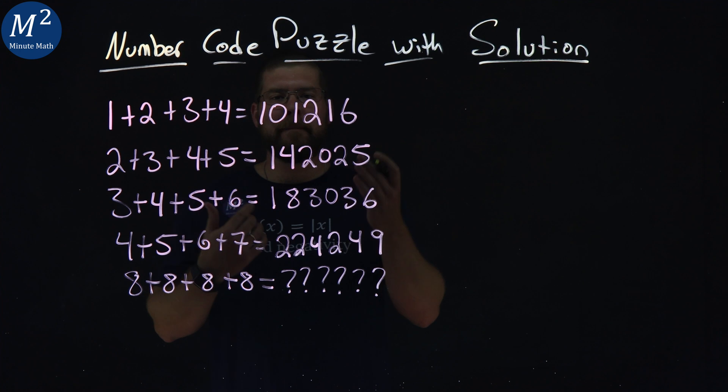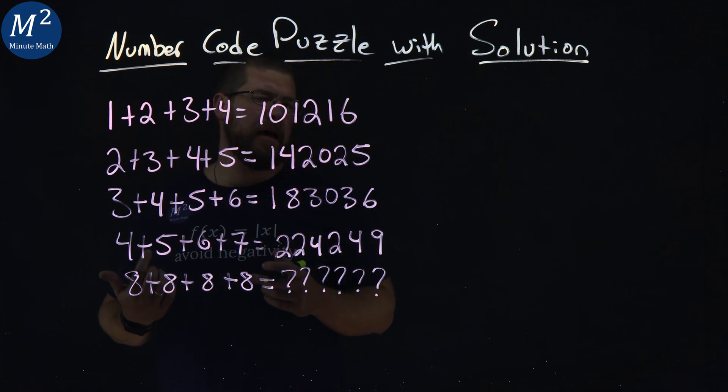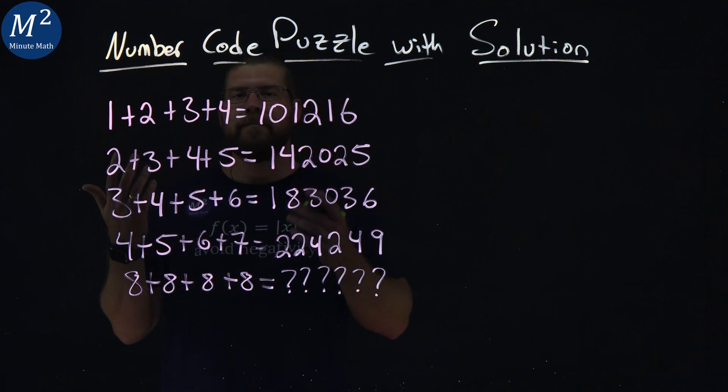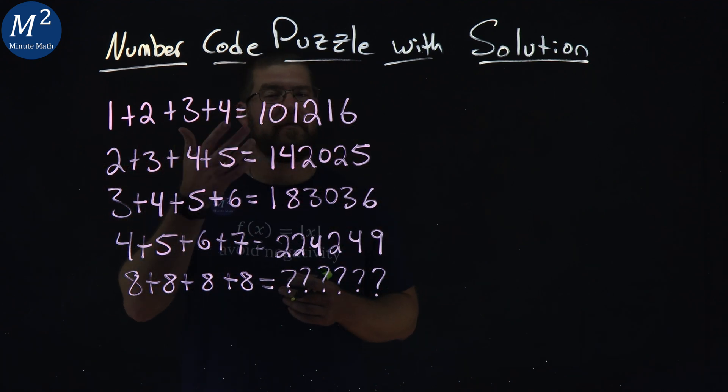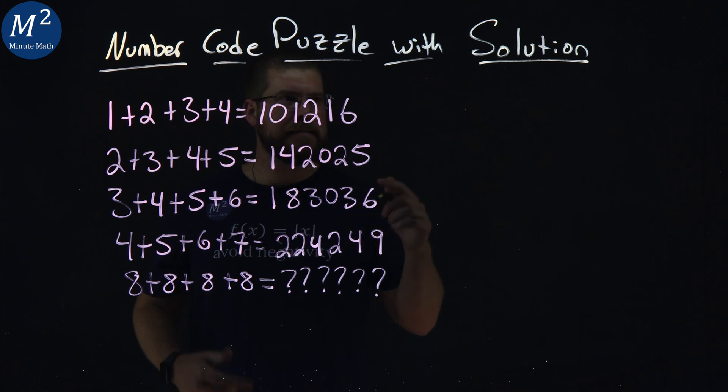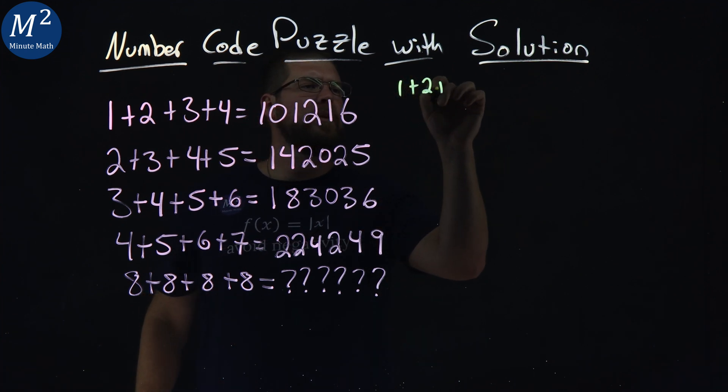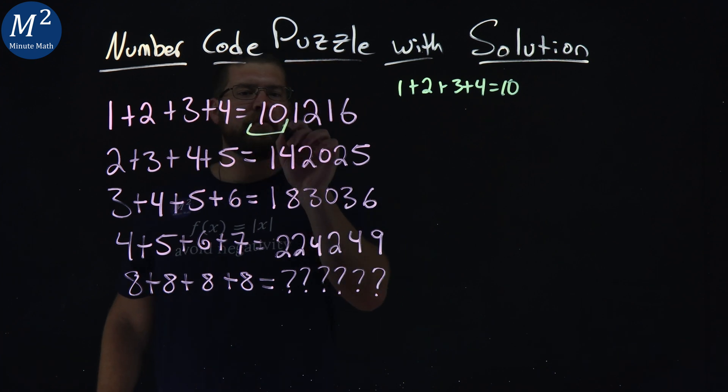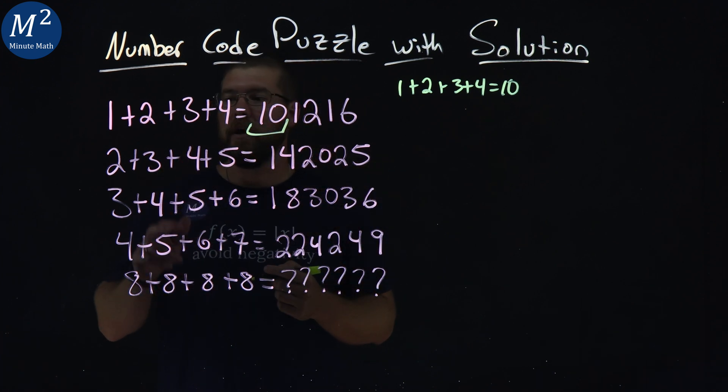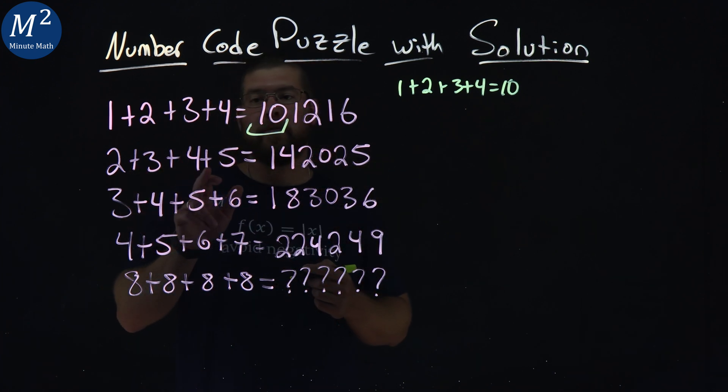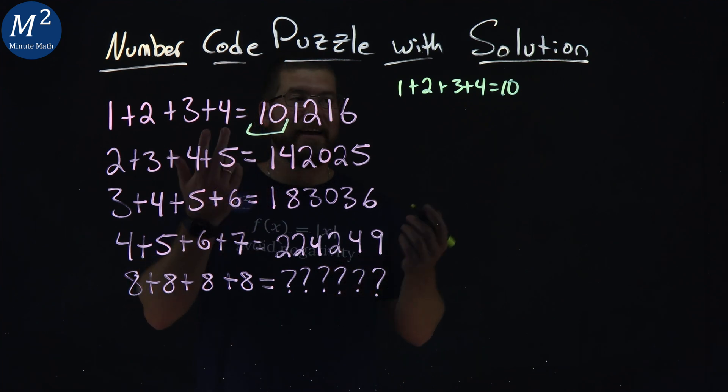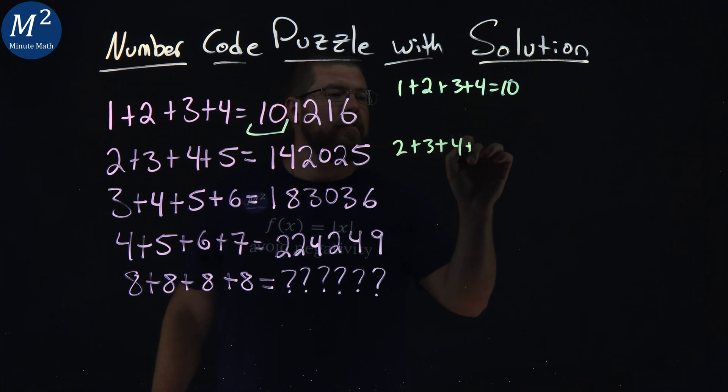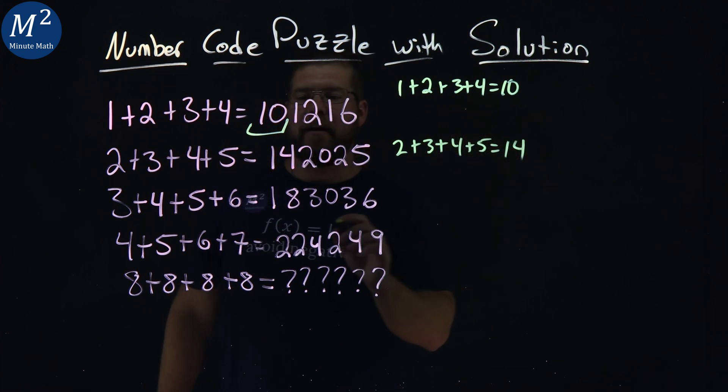So the first thing that kind of reminds me is I see this 10. It popped out at me, knowing from previous experience that 1 plus 2 plus 3 plus 4 equals 10. So 1 plus 2 plus 3 plus 4 does equal 10, our first two digits here. 2 plus 3 plus 4 plus 5, does that give me a 14? And the answer is actually yes, it does.